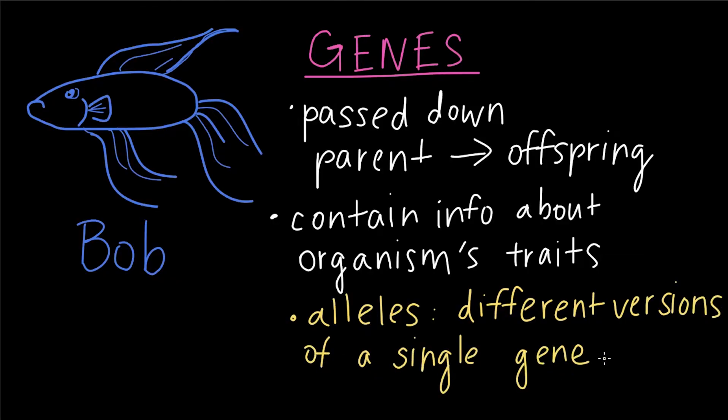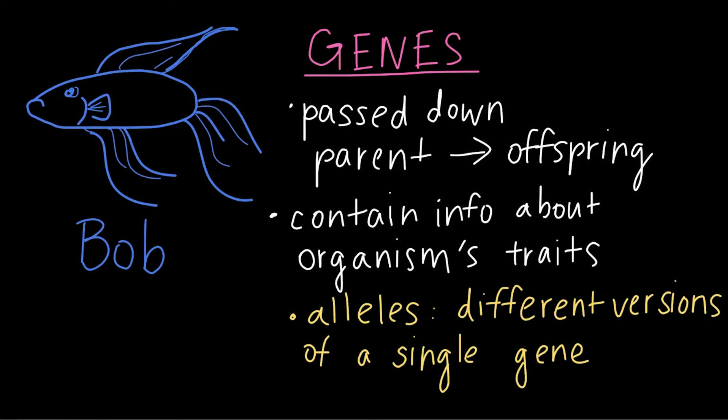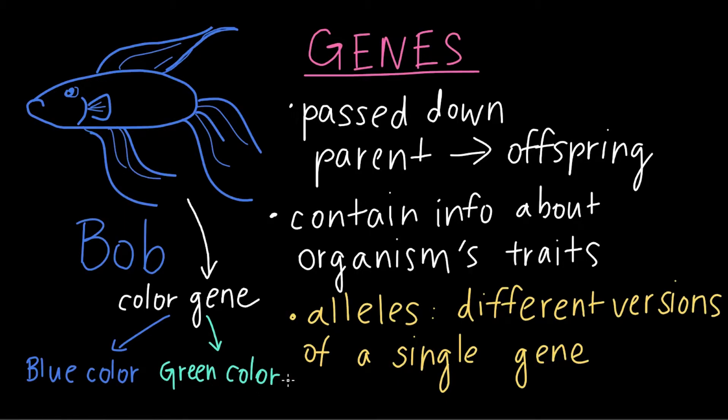For example, there may be a gene that provides information about betta fish coloration. Let me draw an arrow from Bob to color gene. And one allele of this gene may lead to a blue-colored fish, and another allele may lead to green coloration. But physically, what are genes exactly?